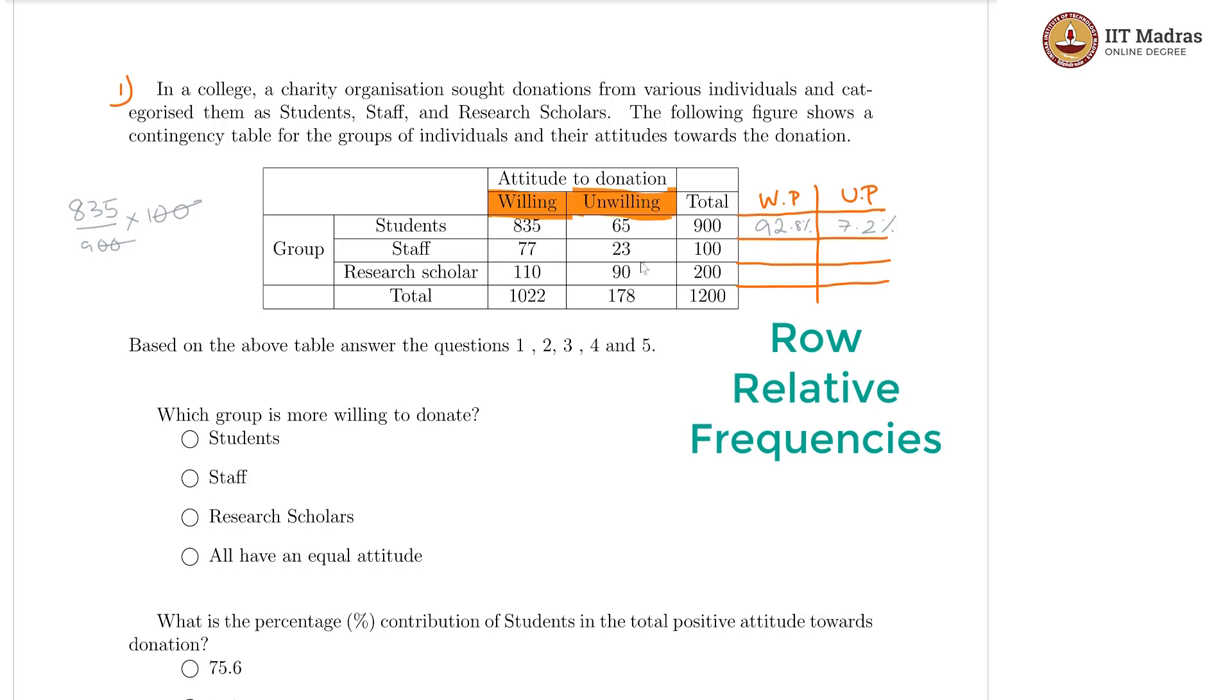And that would give us the remaining unwilling percentage, which would be the remaining 7.2 percent. In the next case we have 77 and 23 coming to a total of 100. The staff is 77 percent inclined and 23 percent not interested. And then this is 110 by 200 which gives us 55 percent willing and 45 percent unwilling. If you looked at the total as well, the total would be 85.2 percent, and the remaining 14.8 percent are unwilling.